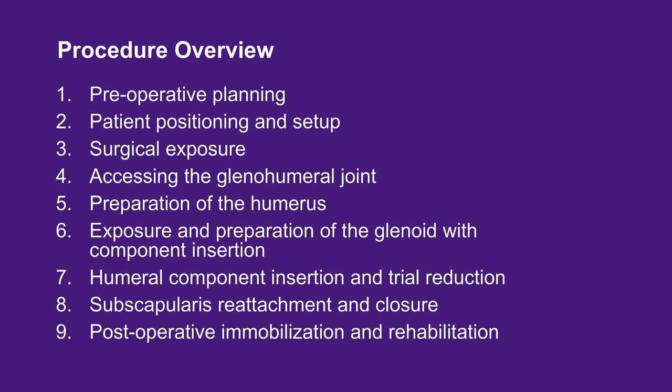The key steps for this procedure include proper preoperative planning, setting up the operating room including patient positioning, surgical exposure, accessing the glenohumeral joint either by subscapularis tenotomy, subscapularis peel, or lesser tuberosity osteotomy, preparation of the humerus, exposure and preparation of the glenoid with component insertion, humeral component insertion with trial reduction to obtain the appropriate combination of stability and range of motion, humeral component implantation, subscapularis reattachment, and closure.